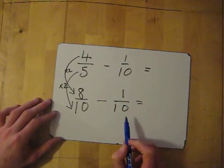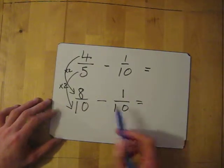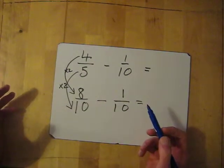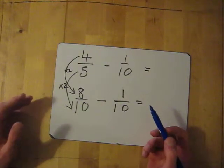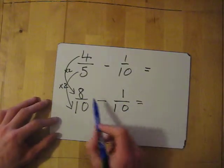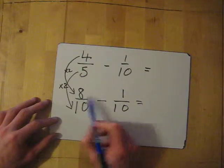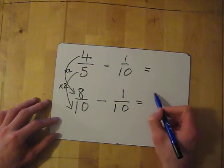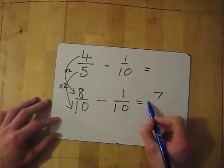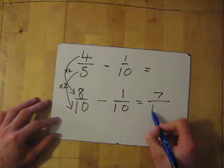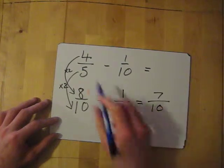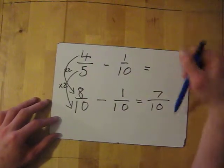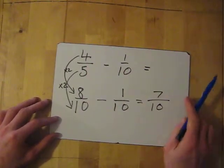Finally, we do exactly the same as subtracting fractions with the same denominators — just take away the top two numbers. Eight take away one is seven, and I keep the bottom number the same. So four fifths take away one tenth equals seven tenths.